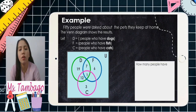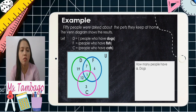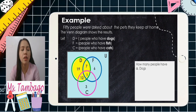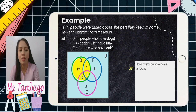Letter A: how many people have dogs? Let's look at the entire green circle. Adding all the numbers inside it: 19 plus 12 plus 1 plus 7 equals 39. So there are 39 people who have dogs.